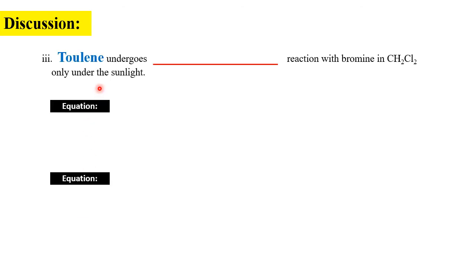For toluene: what type of reaction does toluene undergo with bromine in an inert solvent (dichloromethane)? Write equation one for toluene reacting with bromine without sunlight, and equation two for toluene reacting with bromine under sunlight.